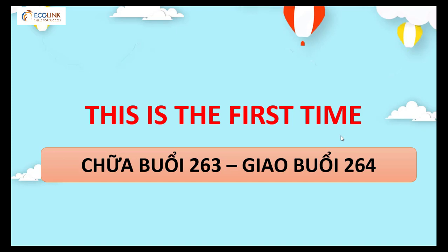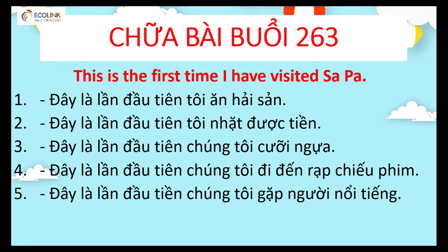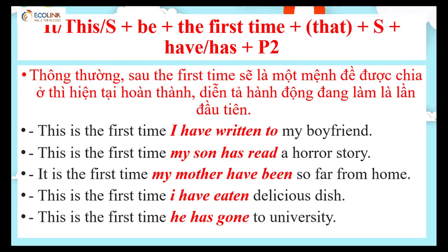This is the first time. Để diễn tả ai đó làm điều gì lần đầu tiên, với cấu trúc câu 'This is the first time', thì động từ đi theo sau sẽ là mệnh đề được chia ở thì hiện tại hoàn thành. Tại sao lại là động từ được chia ở hiện tại hoàn thành? Vì tính đến thời điểm hiện tại, đây là lần đầu tiên tôi viết thư cho bạn của tôi. Từ quá khứ cho đến hiện tại, đến mốc thời gian hiện tại, thì hành động này mới được làm.